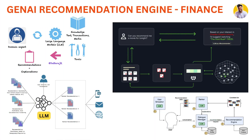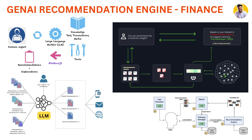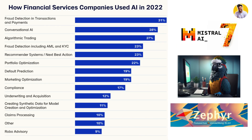The second type is content-based filtering, where you get recommendations based on similar kinds of products. So if you buy milk, it can also recommend other milk-based products like butter or curd. GenAI can enhance these recommendation engine algorithms — such as K-Nearest Neighbor or neural networks — that are currently used in the industry.